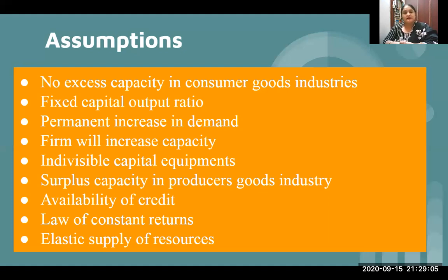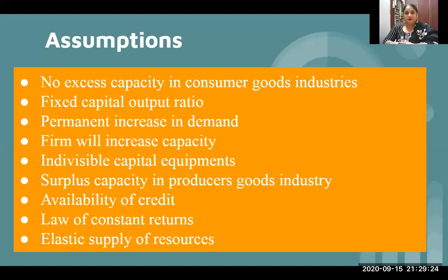Law of constant returns: we assume that constant returns prevail — neither increasing nor decreasing — and we are getting constant returns throughout the economy. Elastic supply of resources: we can increase or decrease our resources according to our needs and requirements.